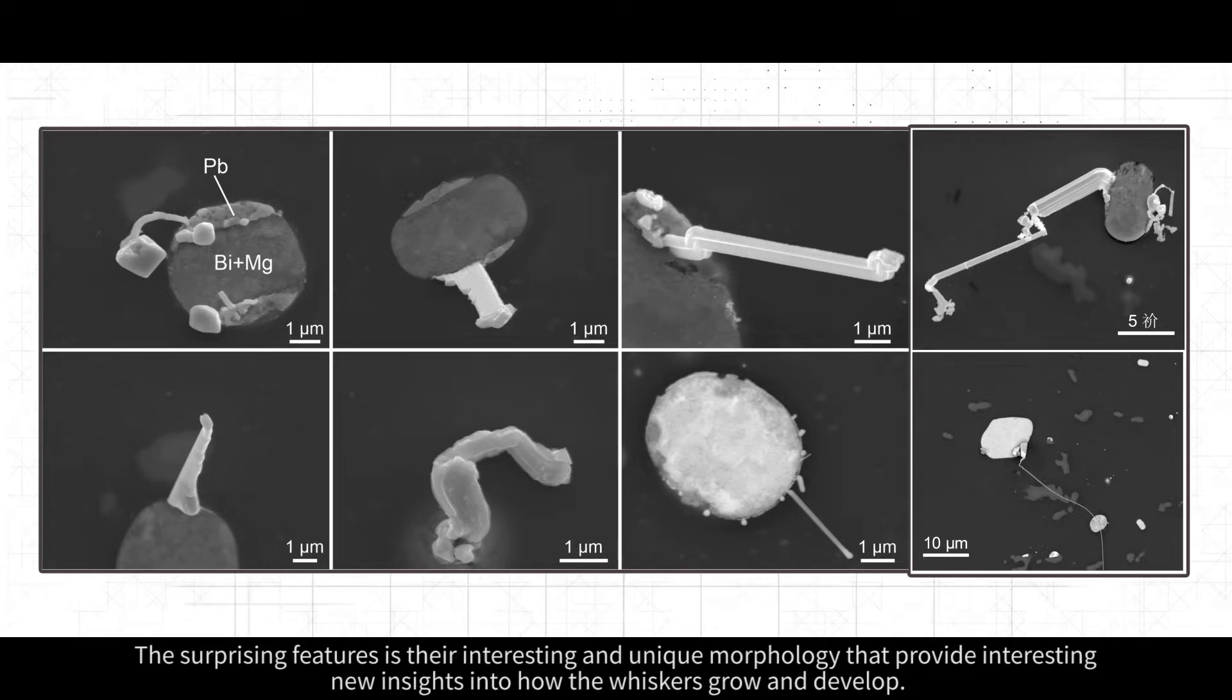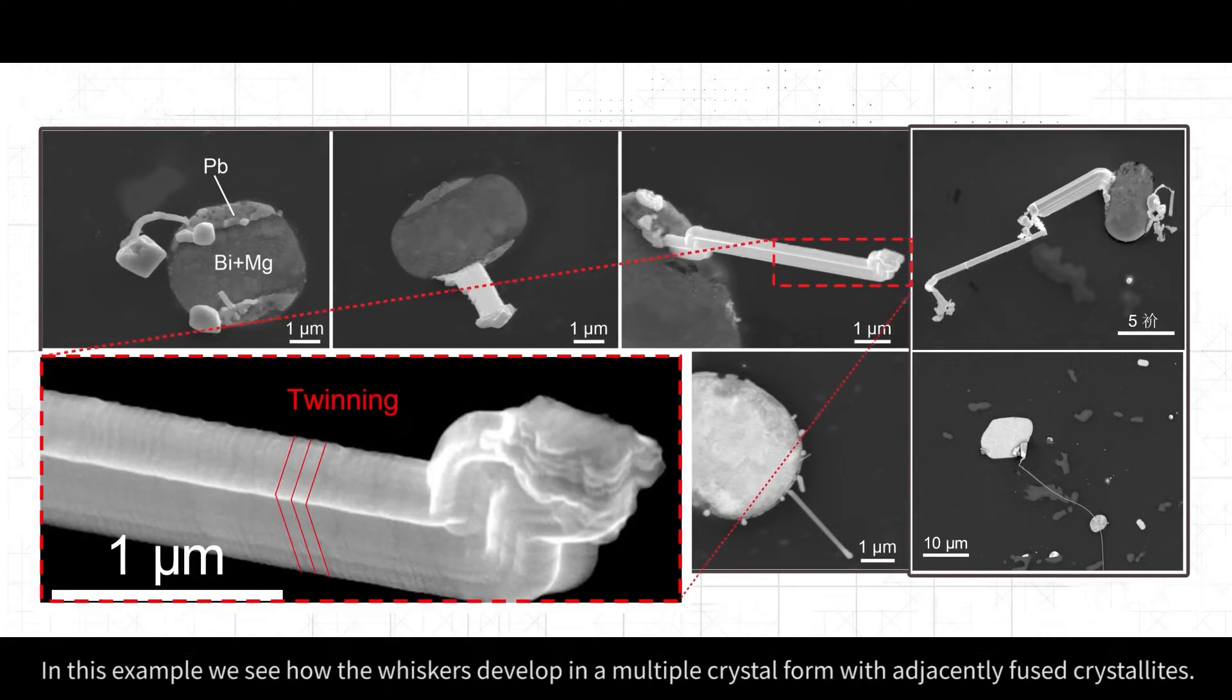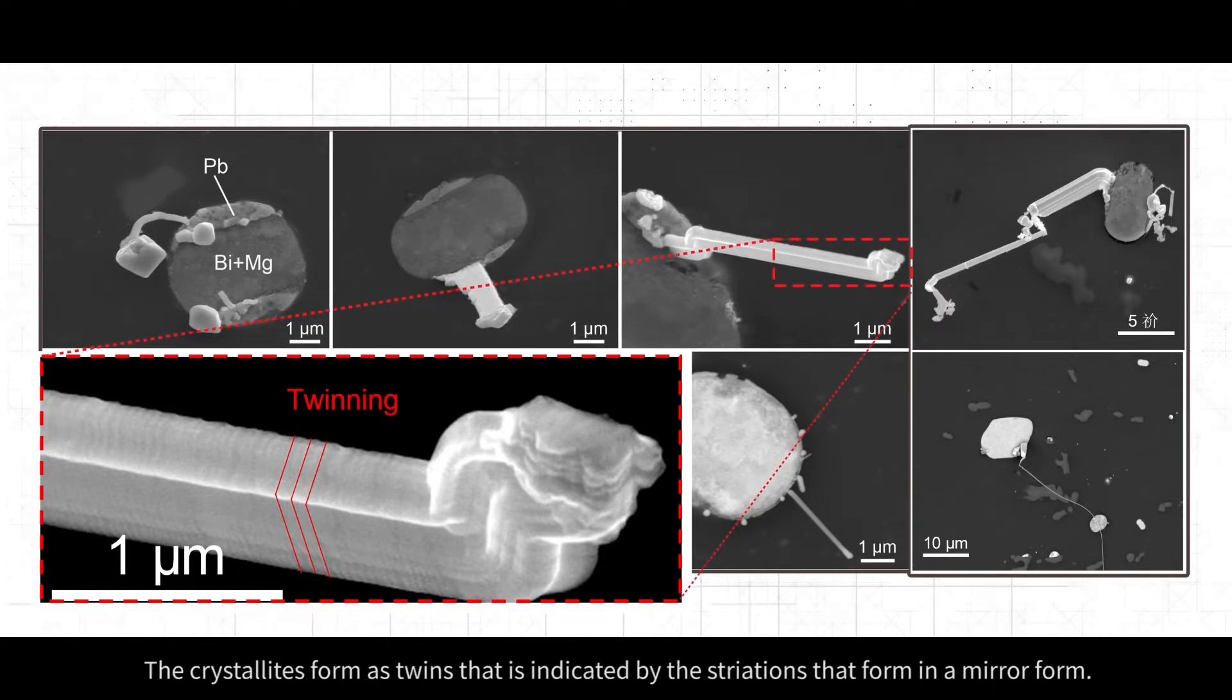The surprising features are their interesting and unique morphology that provide new insights into how the whiskers grow and develop. In this example, we see how the whiskers develop in a multiple crystal form with adjacently fused crystallites. The crystallites form as twins that is indicated by the striations that form in a mirror form.